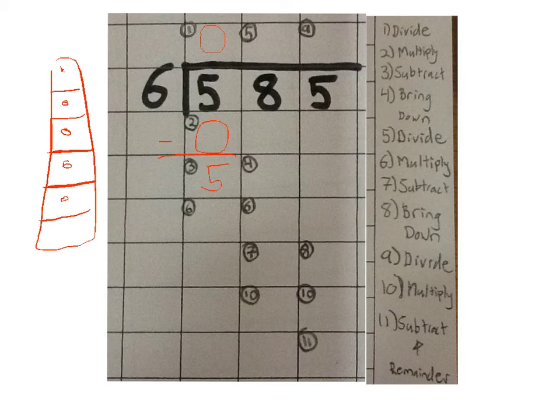Our next step is number 4, bring down. Bring down the 8 into the number 4 box. I'll cross it off to show that I've done it. So now we have 58.